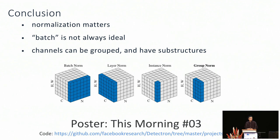We have time for some questions. A question from the audience: different layers of the network have different numbers of channels — have you considered different group sizes per layer? We have done two experiments: in one, we used the same number of groups across all layers; in another, we used the same number of channels per group in each layer. The detailed summary is in the paper, and what we observed is that most types of group normalization have similar performance.